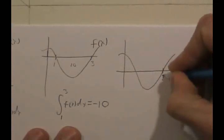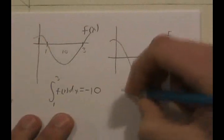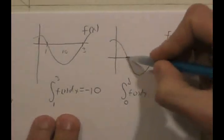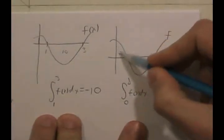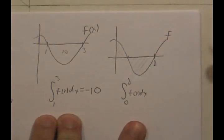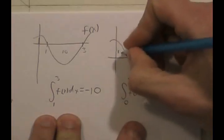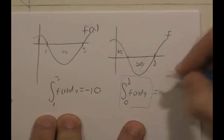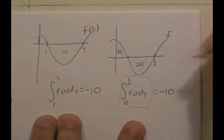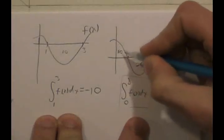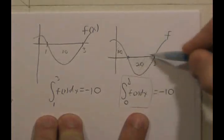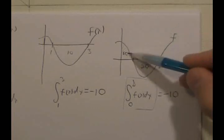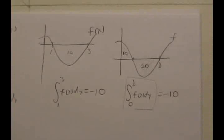Something similar — and I would say predictable — happens if the function is some part over the X axis and some part under it. Suppose we have a function F and this is 8, and we talk about the definite integral from 0 to 8 of this function DX. The value is going to give you the area of the region above the axis minus the area of the region below. So if the area above is 10 and the area below is 20, the value of this definite integral would be 10 minus 20, or minus 10. If the curve is above the axis, the area gets counted as positive; if it's below, it gets counted as negative.